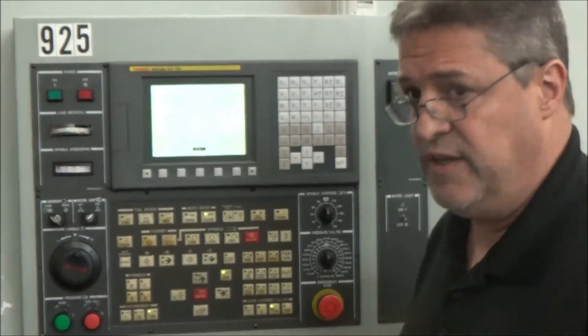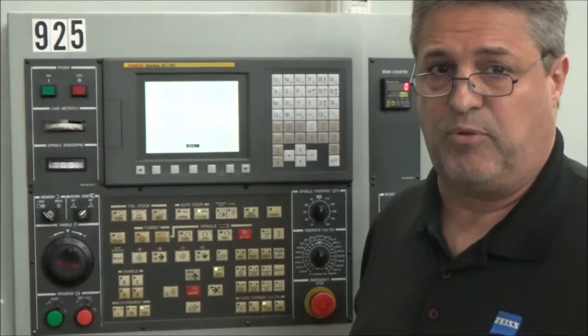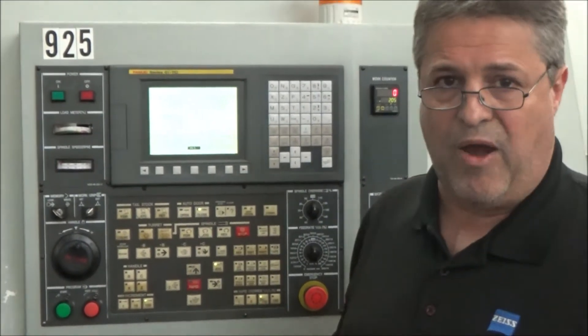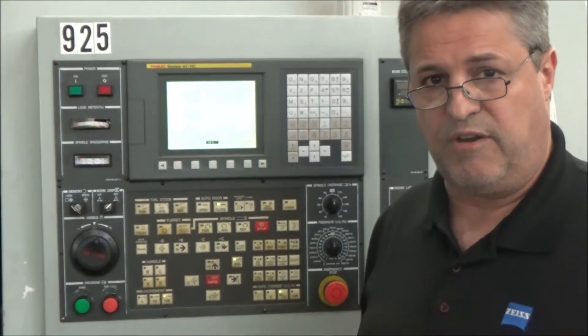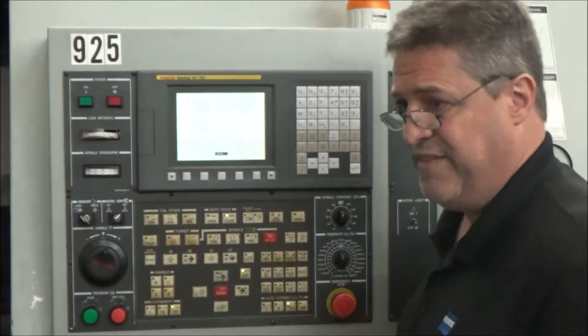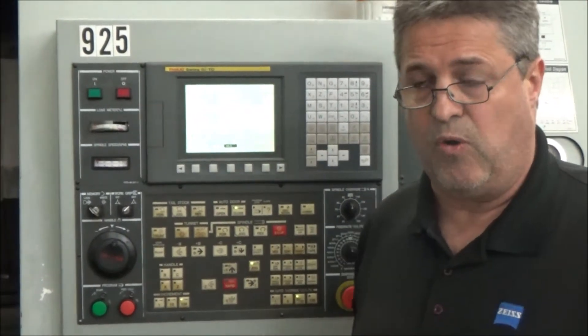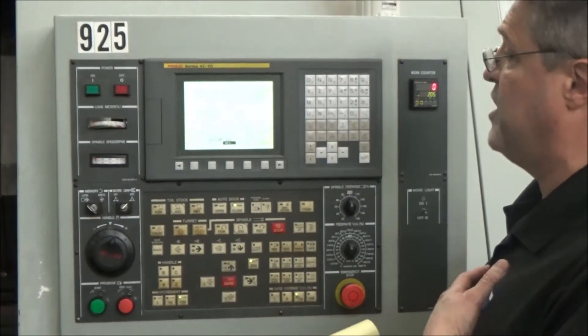So we're going to look for the hours. The hours what we're going to find is in the parameters. Somewhere around parameter 6750 is where you're going to find your hour meter settings in FANUC controls. That's 6750. So I want to go to the parameters and find that.